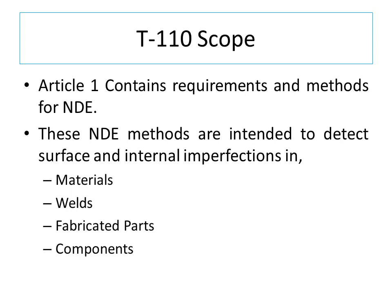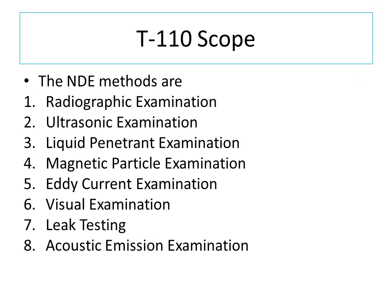Scope of Article 1: Article 1 contains requirements and methods for non-destructive examination. These NDE methods are intended to detect surface and internal imperfections in materials, welds, fabricated parts and components. The NDE methods are: radiographic examination, ultrasonic examination, liquid penetrant examination, magnetic particle examination, electric current examination, visual examination, leak testing, and acoustic emission examination.